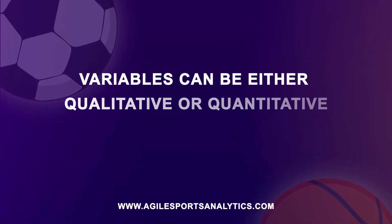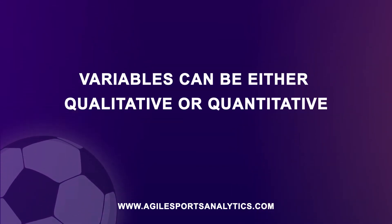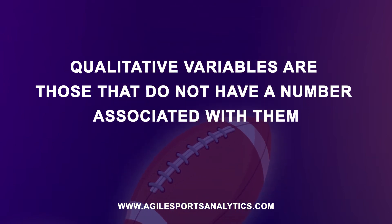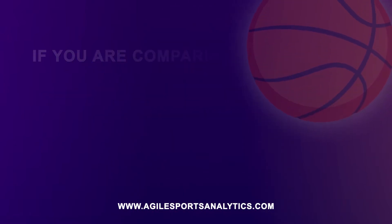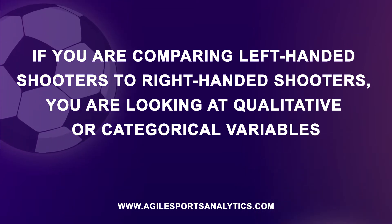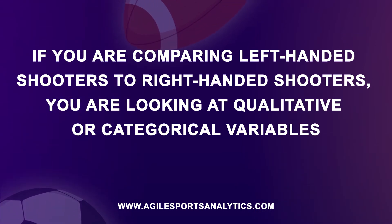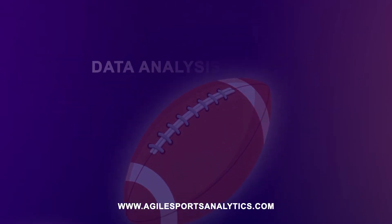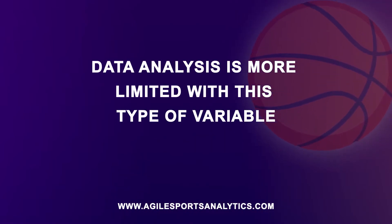Variables can be either qualitative or quantitative. Qualitative variables are those that do not have a number associated with them. If you are comparing left-handed shooters to right-handed shooters, you are looking at qualitative or categorical variables. Data analysis is more limited with this type of variable.